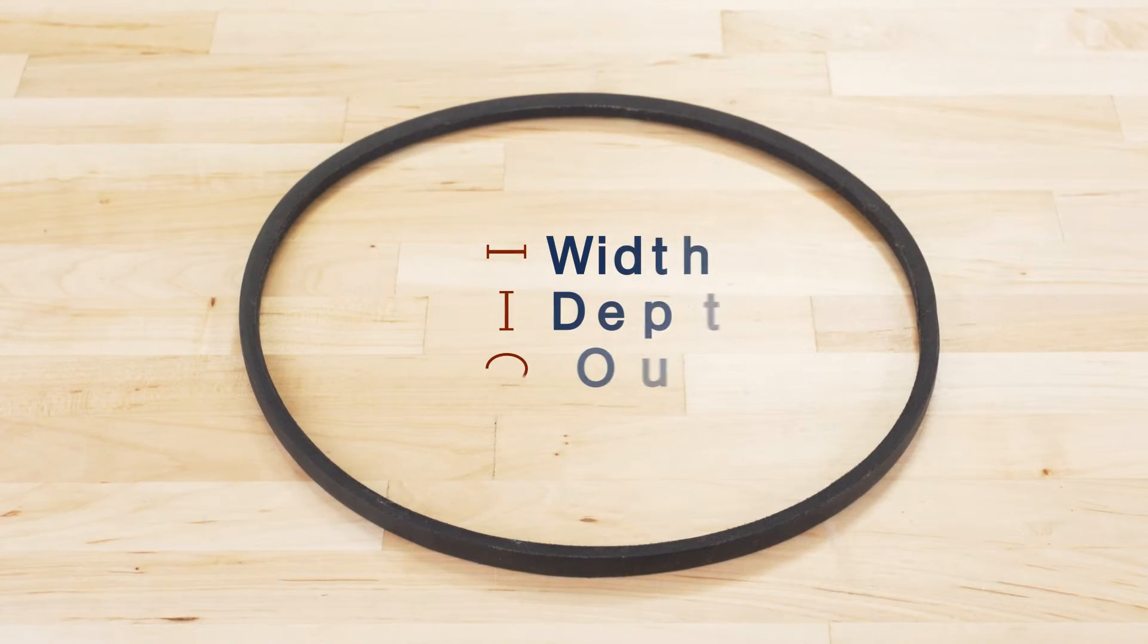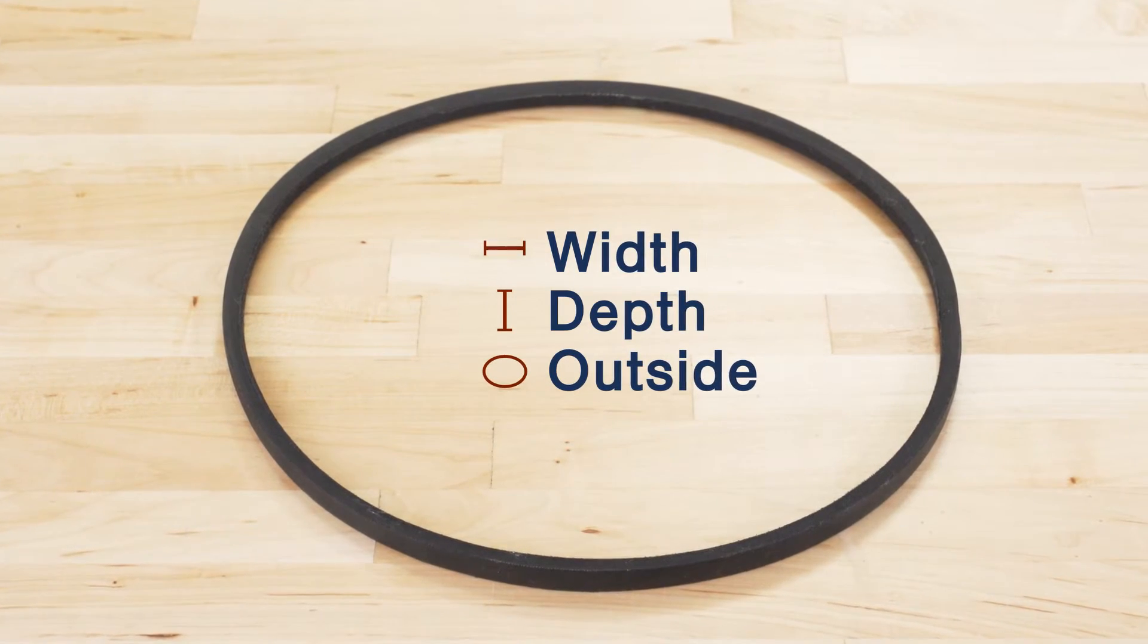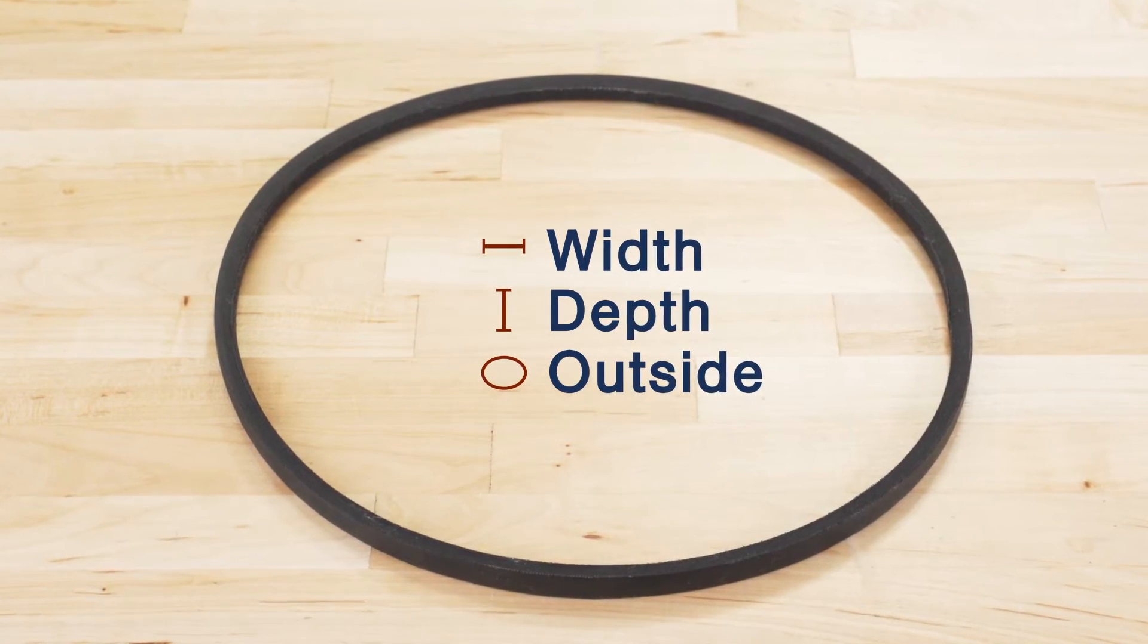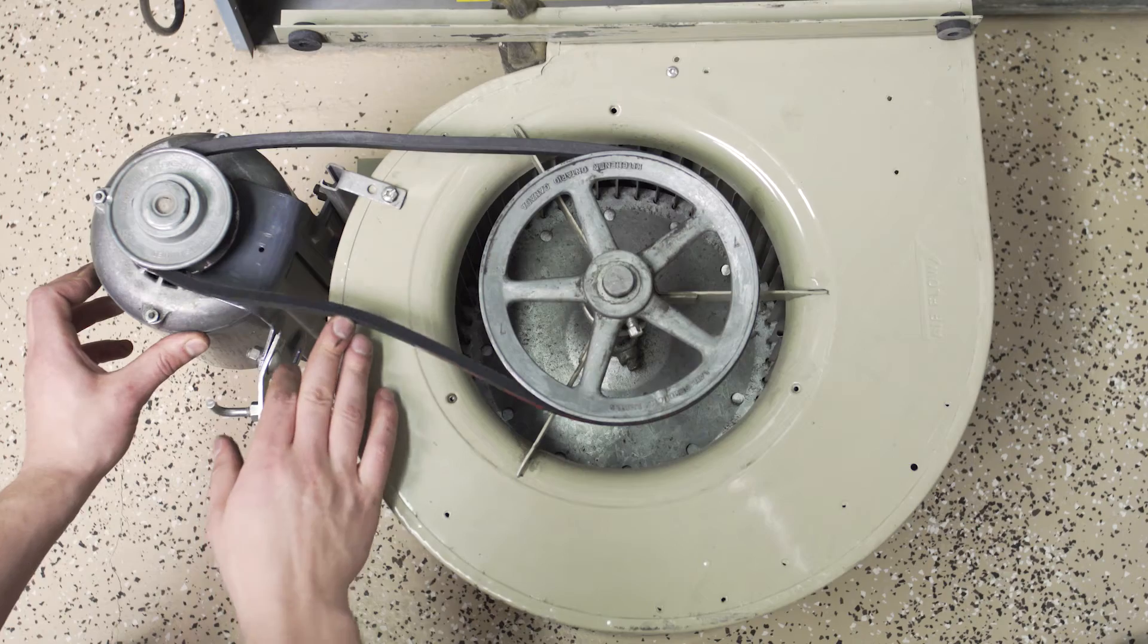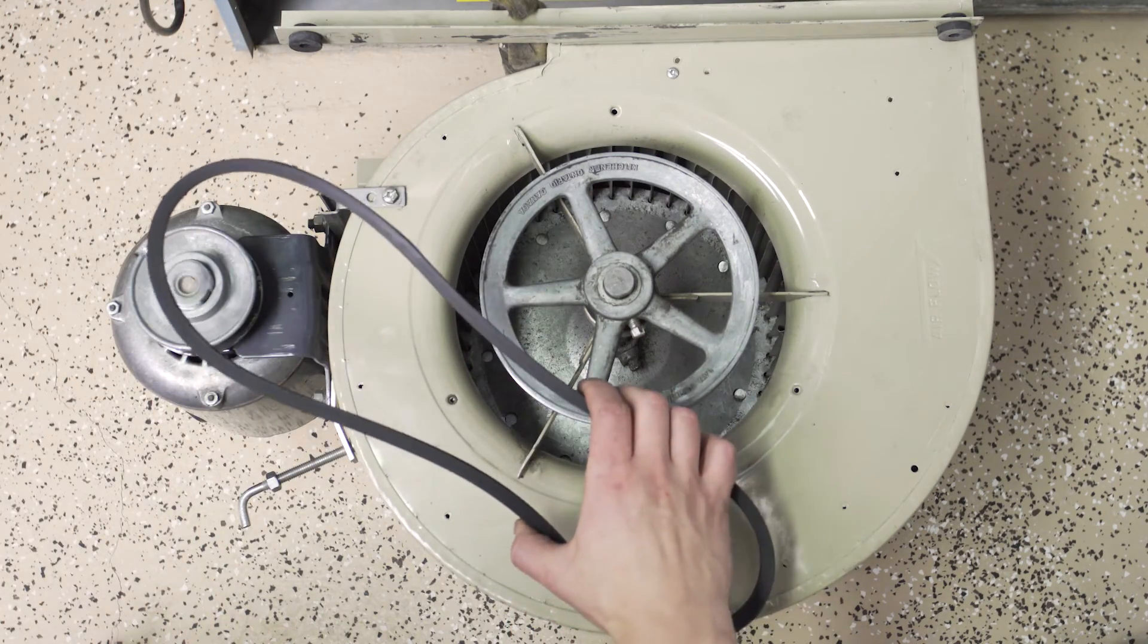Now that you've measured the width, depth, and outside circumference, you have everything you need to find a replacement. But keep in mind that belts do stretch over time, so it's best to err on the side of a smaller belt.